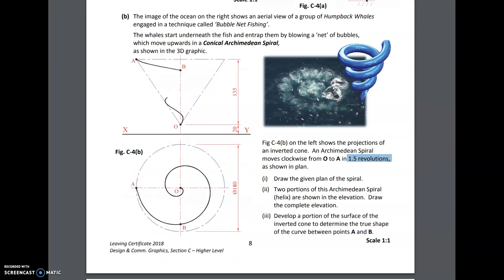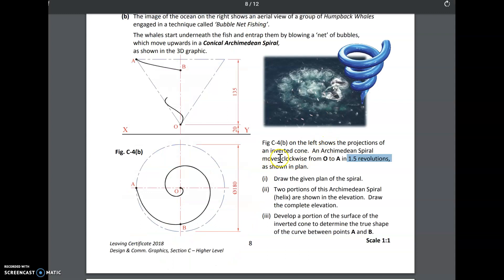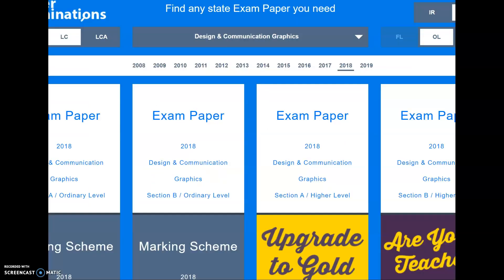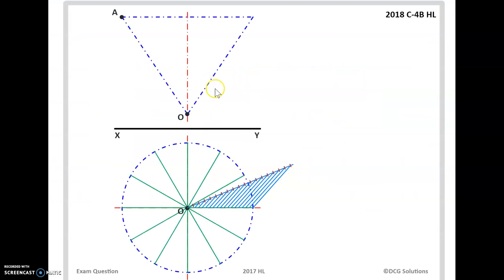Now we're told in the question that we're going clockwise. Clockwise from O to A. So we're going to go around this way. When we look at it, our first point is going to be in here. So we're literally bringing each point onto a separate generator each time. One down to the first, two down to the second, three and so on.